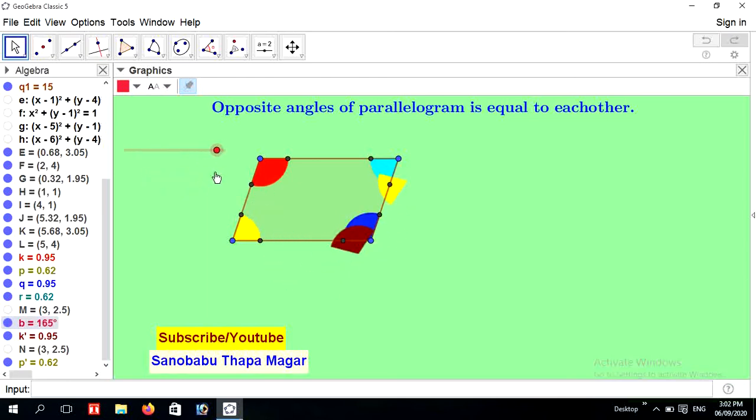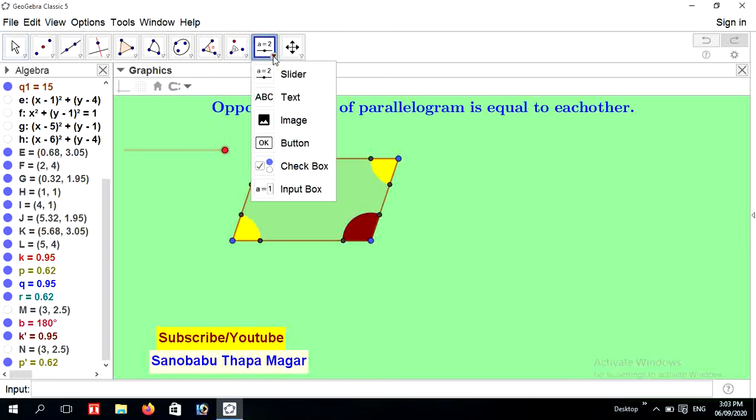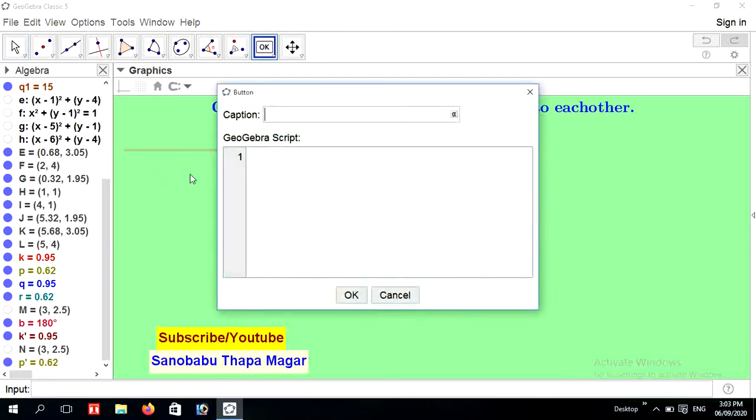You can see in the picture opposite angles are accurately fit with another opposite angle. It's proved opposite angles of parallelogram are equal. Now for dynamic animation, go to slider tool and press button and caption, write here start, and GeoGebra script: start animation, and name of the script start animation.